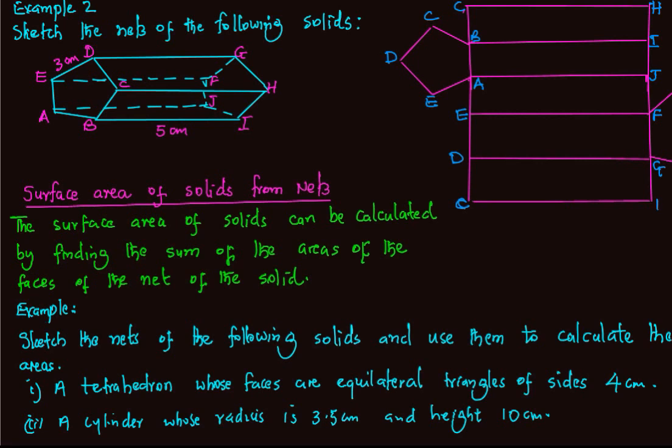G connects to H. This shall be I and this shall be J. We have labeled the net of our solid so that when it is folded back, it gives us the original figure.